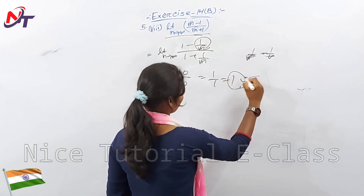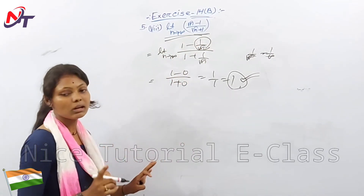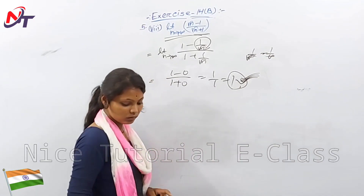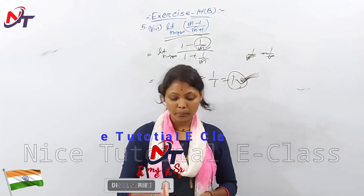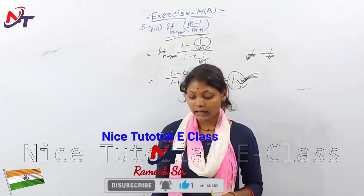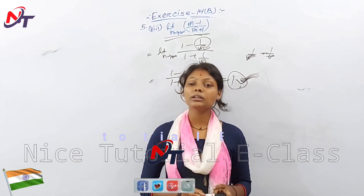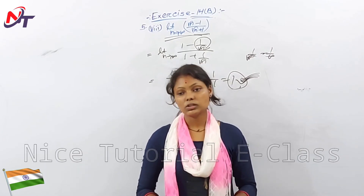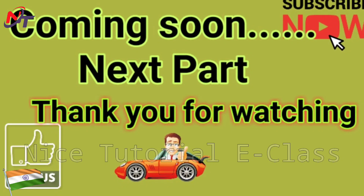So the value of the limit root n minus 1 over root n plus 1 as n tends to infinity is 1. We have completed questions BII. Next questions will continue in the next class. If you liked the video, please like and subscribe to our channel.